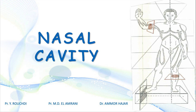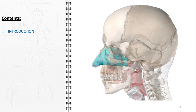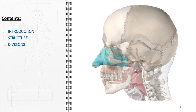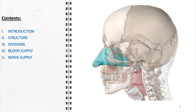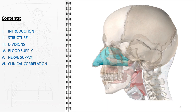In this video, we will explore the anatomy of the nasal cavity. We will begin with an introduction, followed by a detailed description of the nasal cavity's structure and divisions. Next, we will delve into its blood and nerve supply. Subsequently, we will discuss some clinical correlations. Finally, we will conclude with key takeaways.